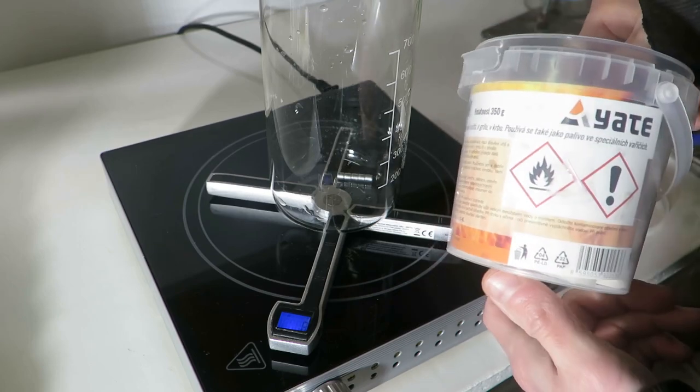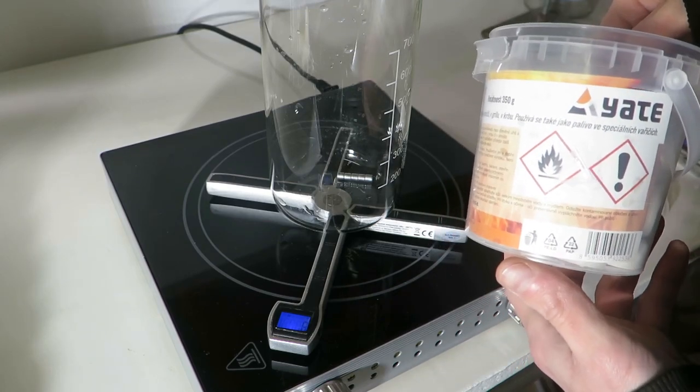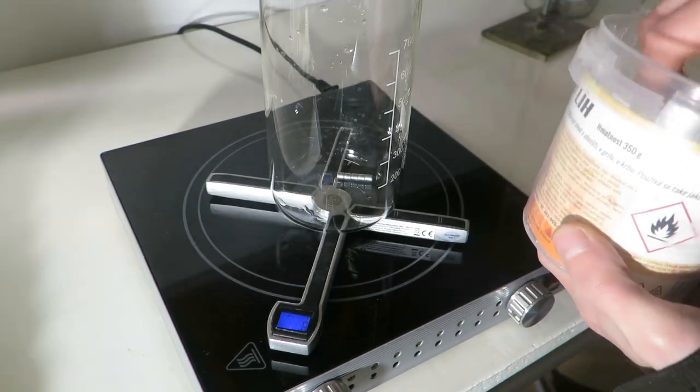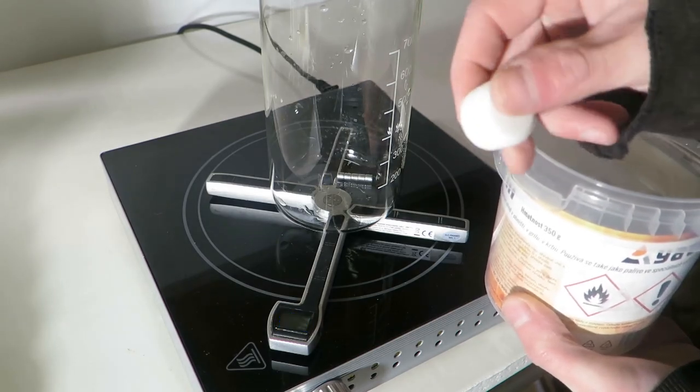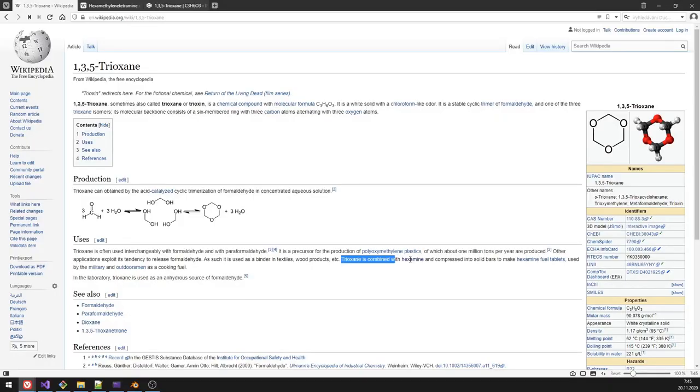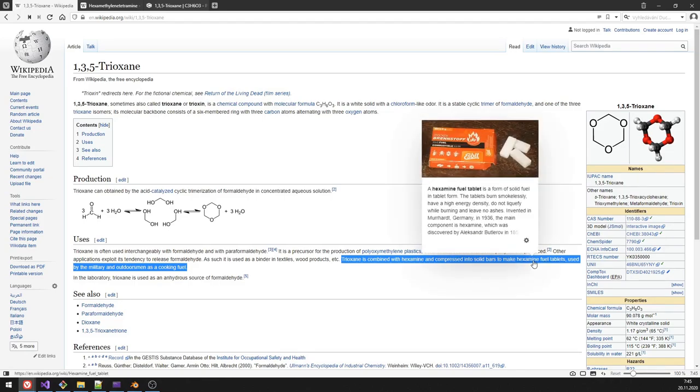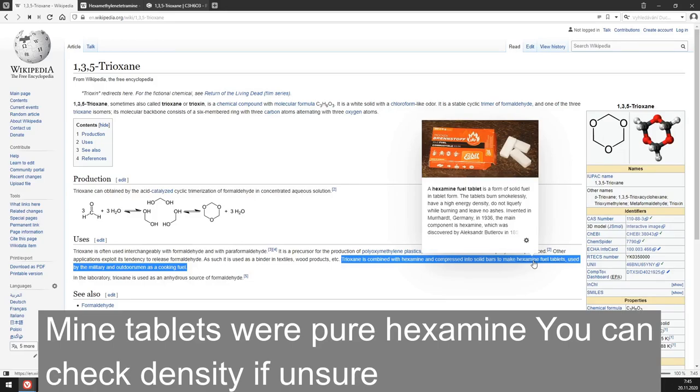So I bought these hexamine tablets. You can buy them from army shops or some survival stuff. Not sure if army shops are a thing in the US. I didn't do proper research before I was doing this reaction, so I later found out that there is quite a bit of trioxane in these tablets.